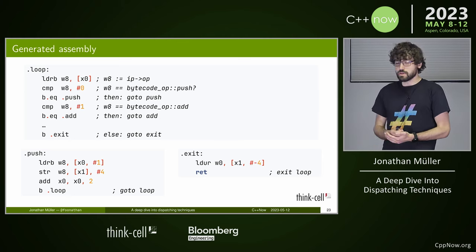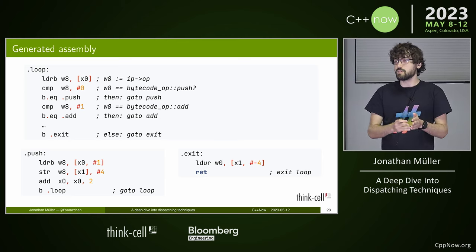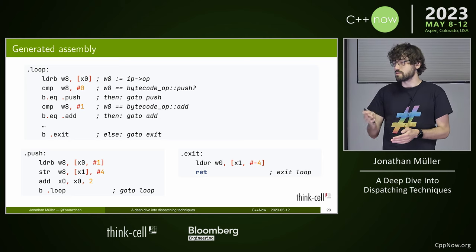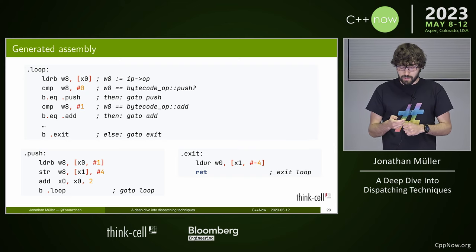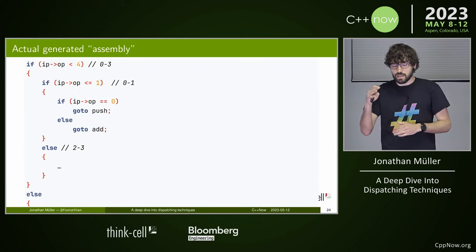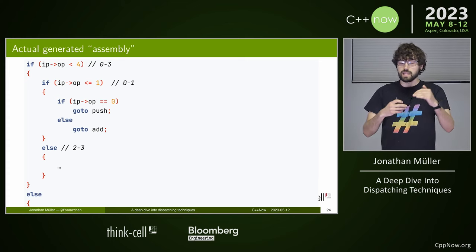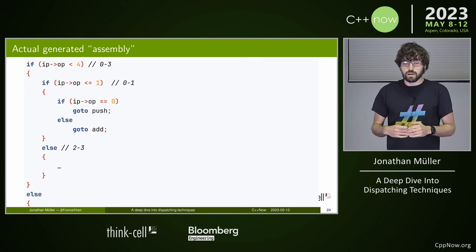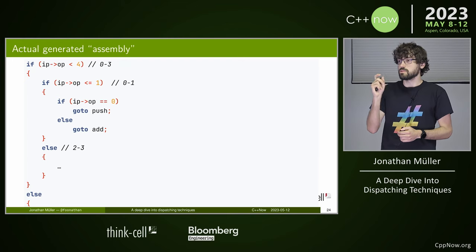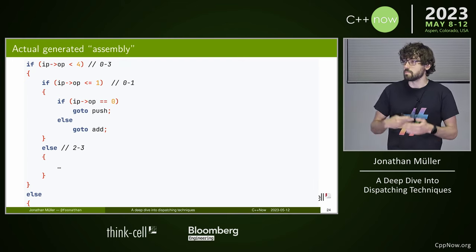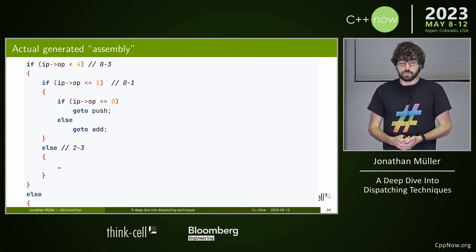This straightforward code isn't actually what the compiler generated — it would do linear comparisons proportional to the number of opcodes. The compiler does a binary search instead. In C terms, it first checks if the opcode is less than 4, then does a comparison against 1 to narrow down to two cases. This gives log-n comparisons, which is nicer. So: thanks, compiler.